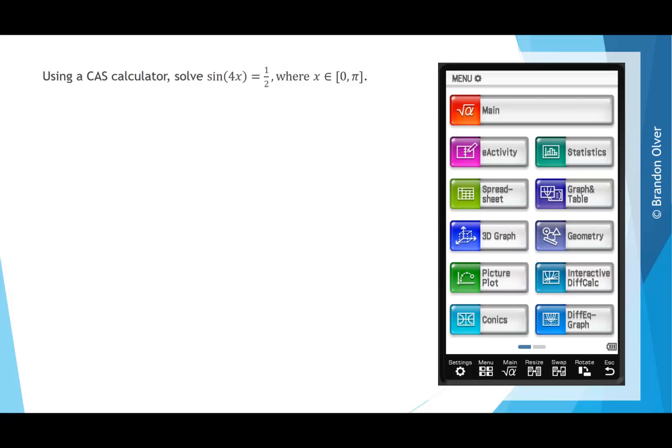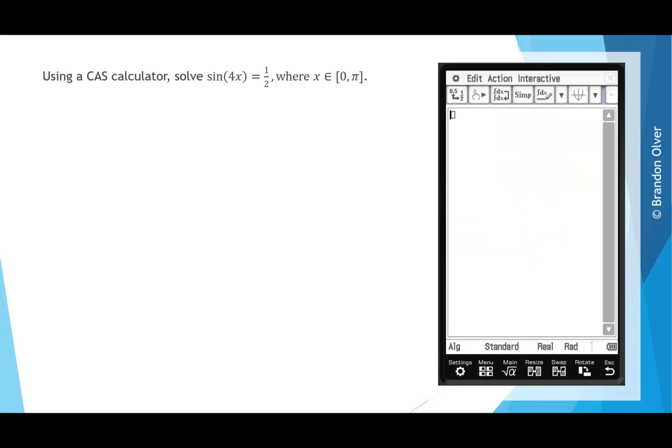On the CAS calculator, go into the main menu. Before we go too far into solving this, we need to make sure we have the correct settings on our calculator. When we're dealing with solving trigonometric equations, as a general rule, you want radians to appear down here. And then you also want to be in real and standard to make sure you get the exact answers.